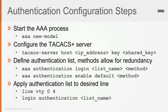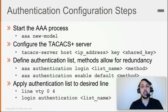Once you have defined 'aaa new-model', you have the option to define the TACACS or RADIUS server and then configure authentication. We have two types of authentication: login and enable. The commands are 'aaa authentication login' or 'aaa authentication enable'. What comes next is the list name, which can be either the keyword 'default' or a specific list name that you choose.